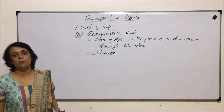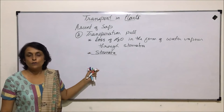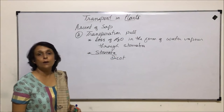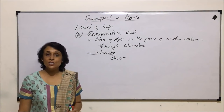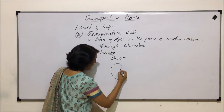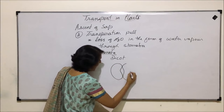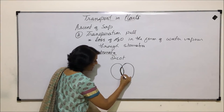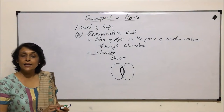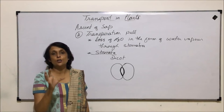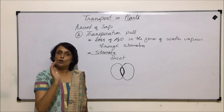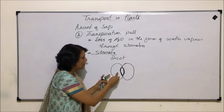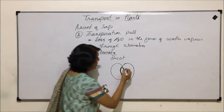Transpiration takes place through stomata. In dicot plants, stomata have two guard cells which are bean-shaped or kidney-shaped. We must remember that in these guard cells, the inner wall is thicker compared to the outer wall. When the cells become turgid, the thicker inner wall shows bending or curving, and due to this the opening becomes visible as a wide gap. This is the guard cell structure in dicots.